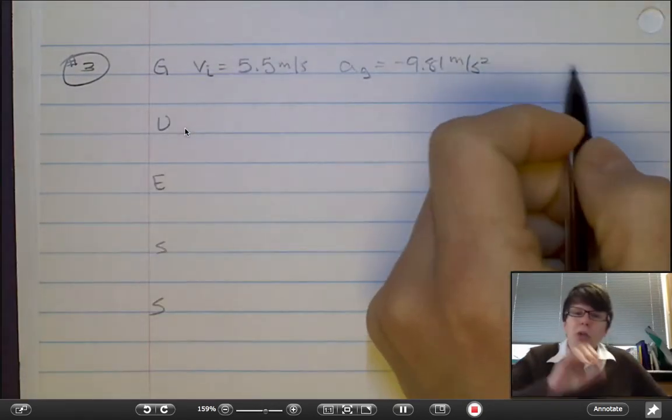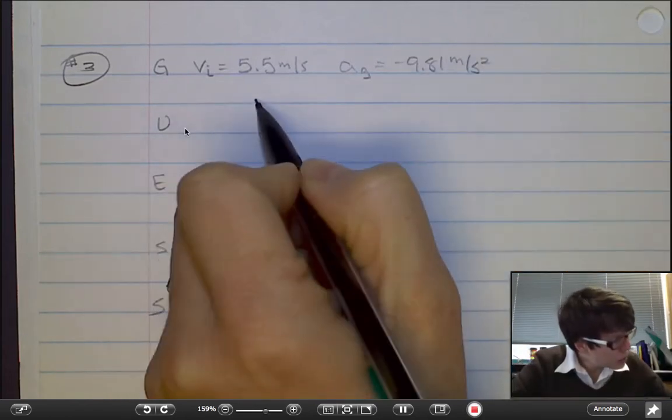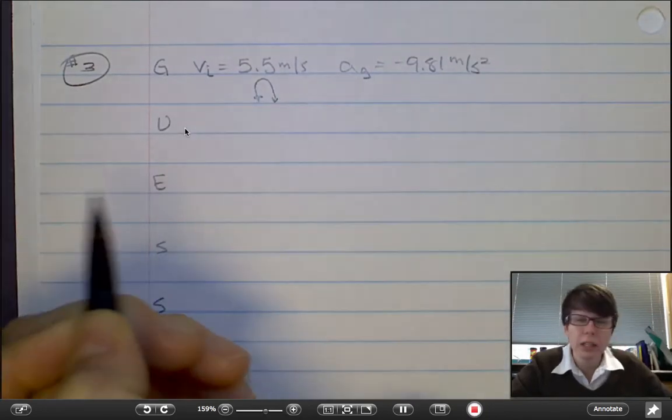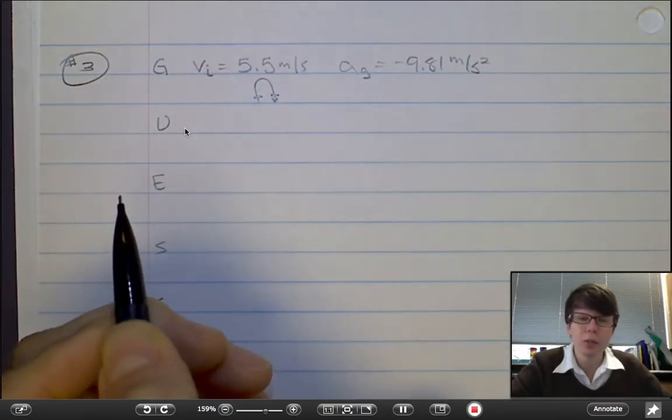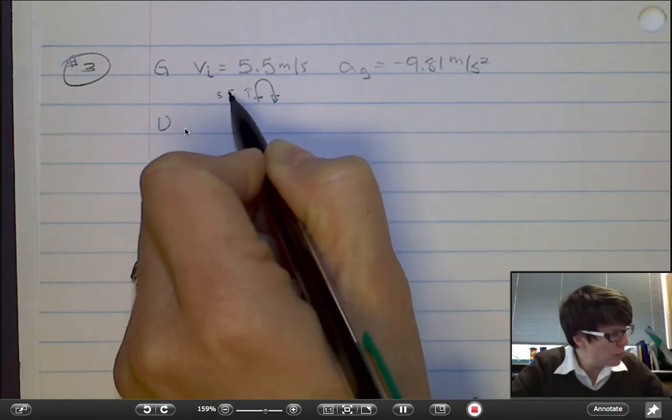And you can make an assumption about Loki's velocity. It turns out that any object thrown up that returns back to the Earth is going to leave you at one velocity and come back down at the opposite velocity. So if going up, we're at 5.5 meters per second.